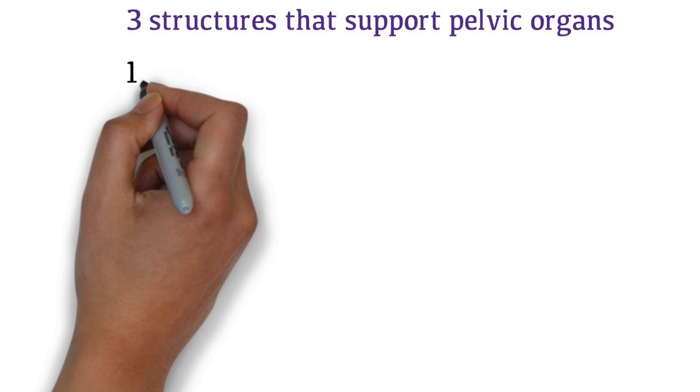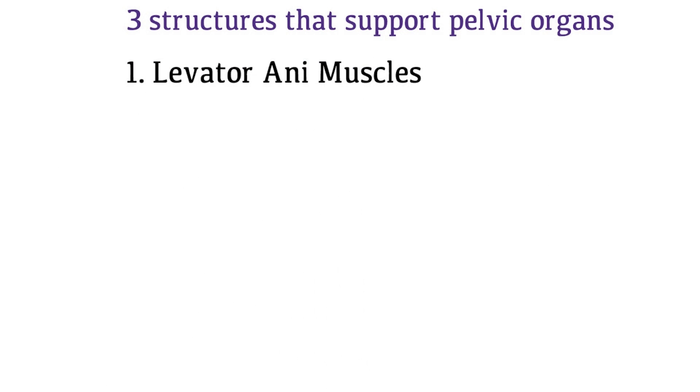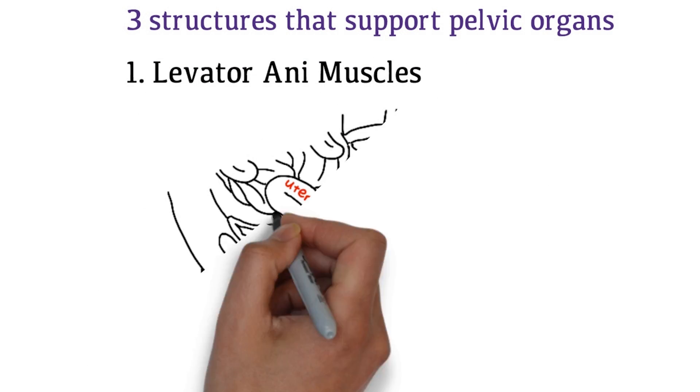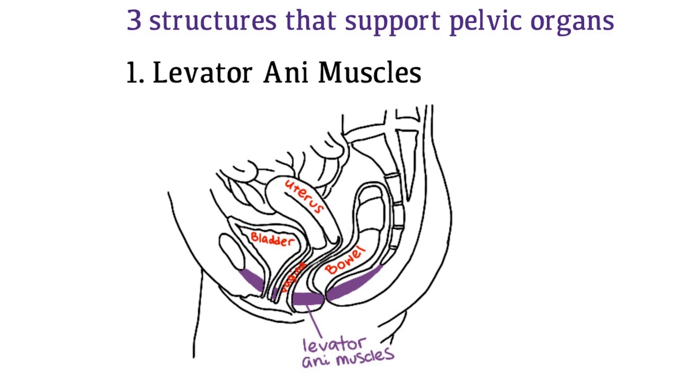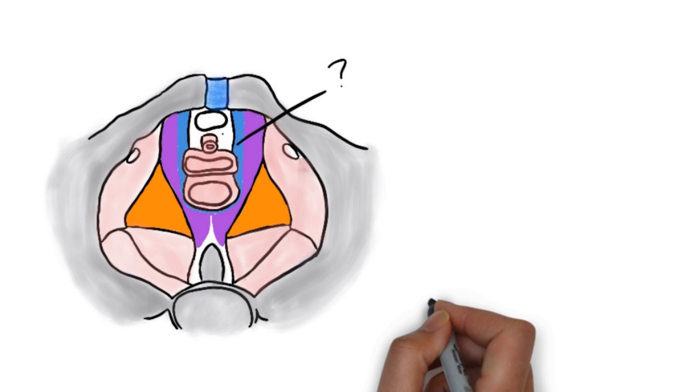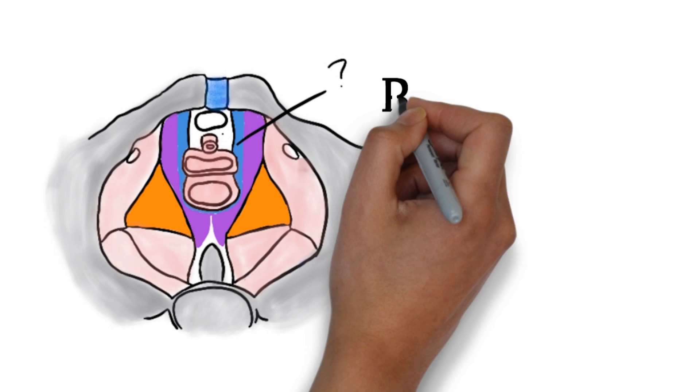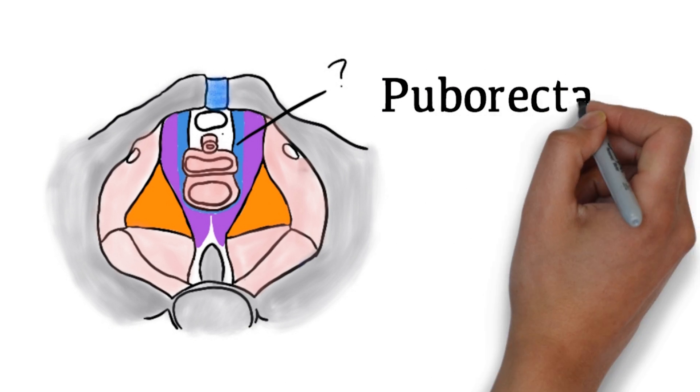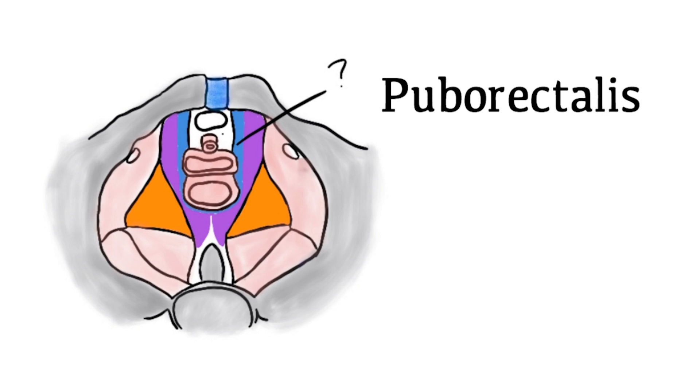Let's look at each structure individually. First, let's look at the levator ani muscles. Can you name these muscles? Puborectalis. Puborectalis originates from the pubic bone and wraps around the rectum to the external anal sphincter.